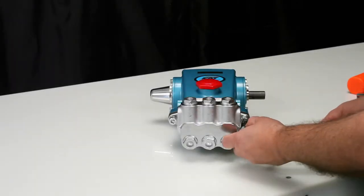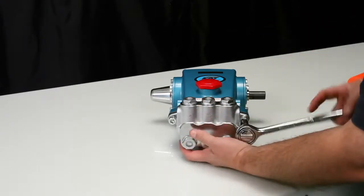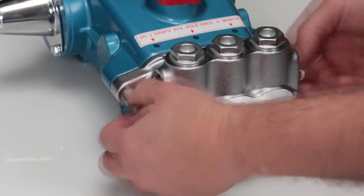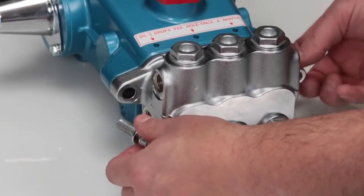To service or repair the seals, begin by removing the manifold. The manifold can be removed using an 8mm Allen wrench to remove the two hex socket head screws.